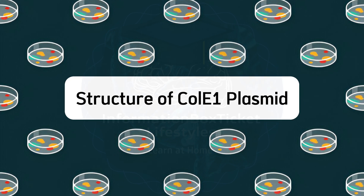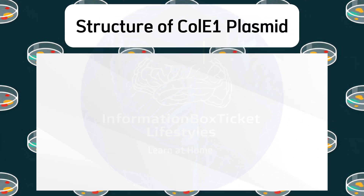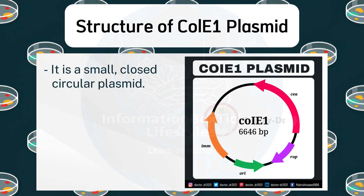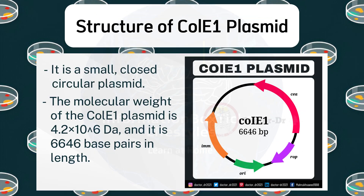Structure of ColE1 Plasmid. It is a small, closed, circular plasmid. The molecular weight of the ColE1 Plasmid is 4.2 × 10 to the power of 6 Da.